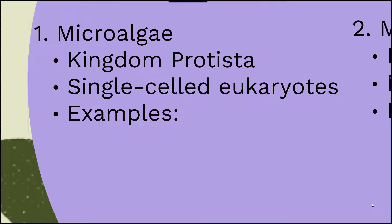First is the microalgae. This group of organisms belongs to the kingdom Protista. Algae and plants are sometimes thought of as being in the same group; however, they are quite different. Algae belong to a kingdom called Protista, so it's a completely separate domain from plants. They consist of single-celled eukaryotic organisms, so they are eukaryotes and not prokaryotes, which means they'll have chloroplasts and a series of other organelles not present within a prokaryote.